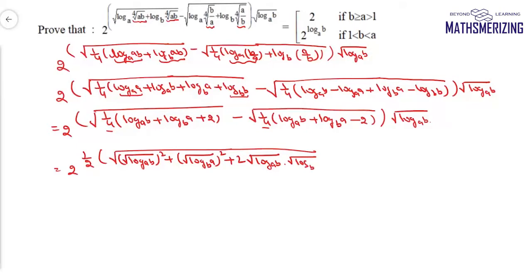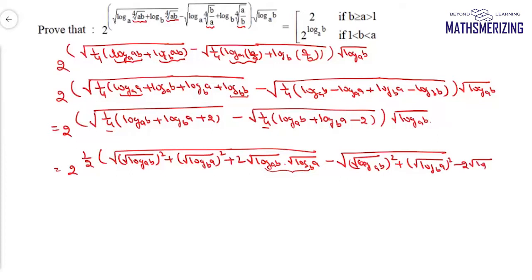Now log b base a times log a base b equals 1, so I can express the first expression in that form. For the second one, I can write: 1/4 log b base a — and recognizing the forms as a² + b² + 2ab and a² + b² − 2ab — I can write the square root of log b base a whole square, plus the square root of log a base b whole square, minus 2 times the square root of log a base b times log b base a, into log a base b.